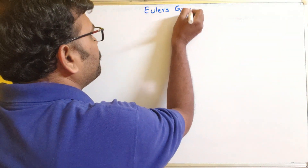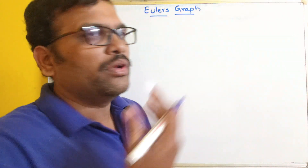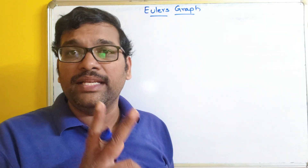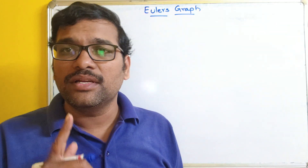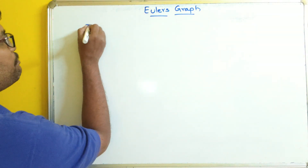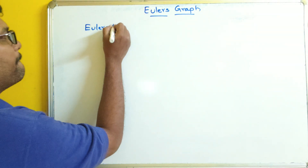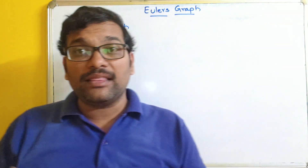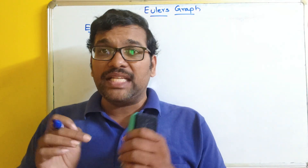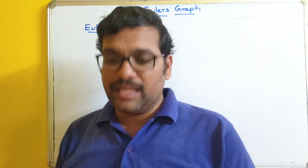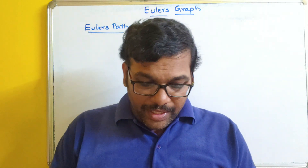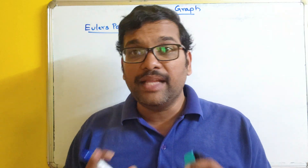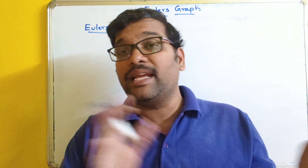Similar to our Hamiltonian graph, before going to see Euler's graph, we have to learn two things: one is Euler's path and Euler's circuit. We have discussed about path and circuit before. If it is a path, the starting vertex and the ending vertex should be different. If it is a cycle or a circuit, the starting vertex and the ending vertex should be the same. That is the main difference between path and circuit.